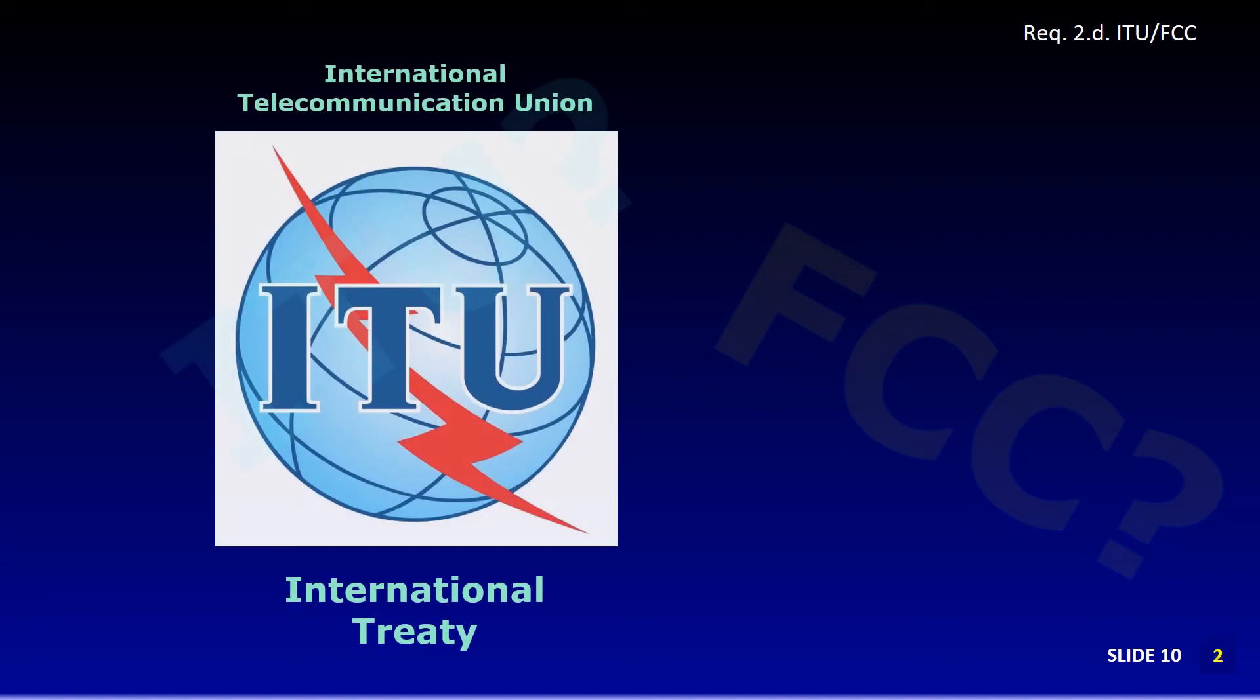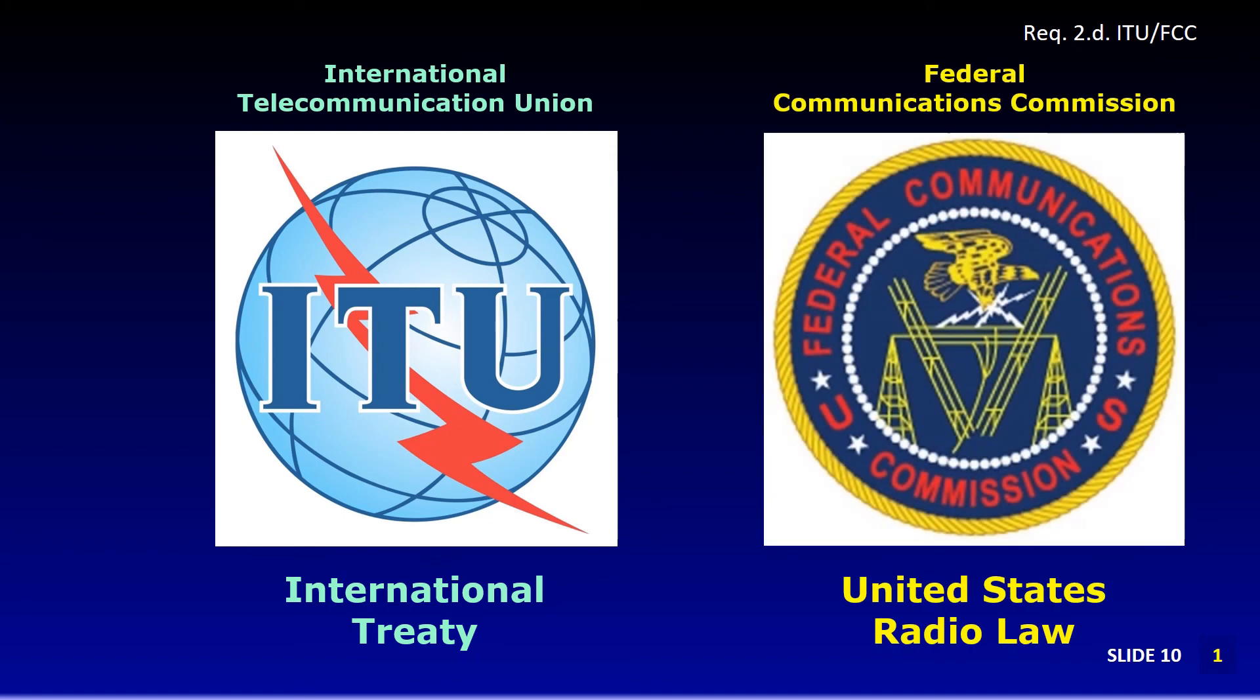This international group is called the International Telecommunications Union or ITU. The ITU coordinates the agreements in the form of treaties between countries and has its headquarters in Geneva, Switzerland. The agency in the US government, which creates and enforces law to help us fulfill the international treaties, is called the Federal Communications Commission, or FCC.